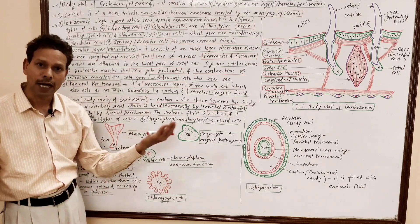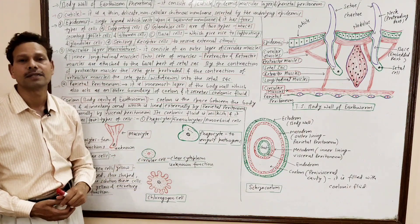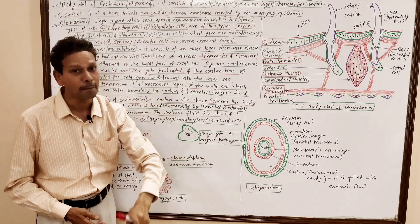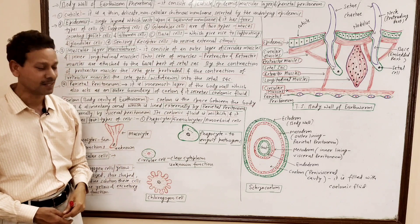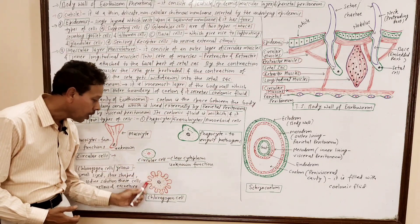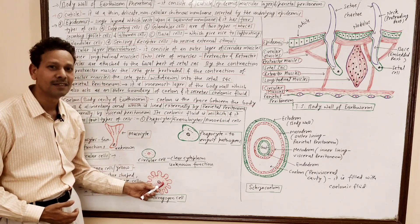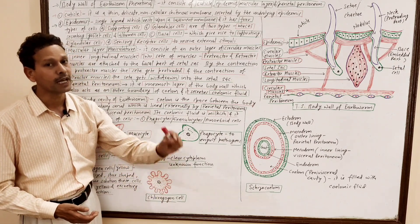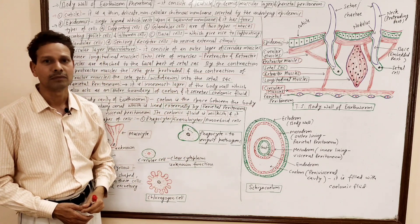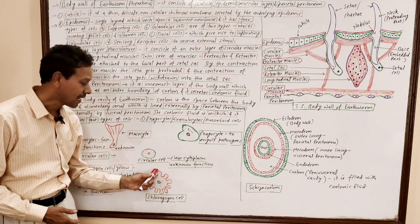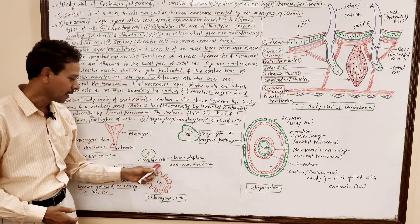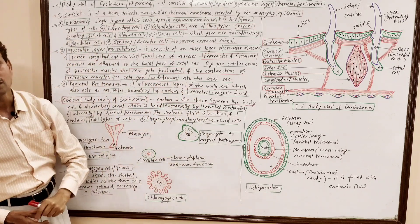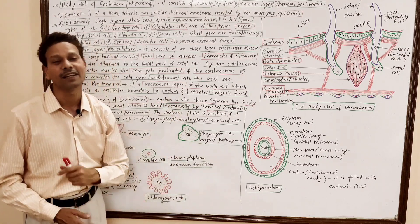The third type of cells are small circular cells with clear cytoplasm, and their functions are again unknown. The fourth type of cells — very important for competitive and BSC students — are special star-shaped cells called chloragogen cells. These small star-shaped cells are yellowish in color when stained in iodine solution. These cells are excretory in function and are named chloragogen cells, also called yellow cells. They are the excretory cells of the coelomic fluid.